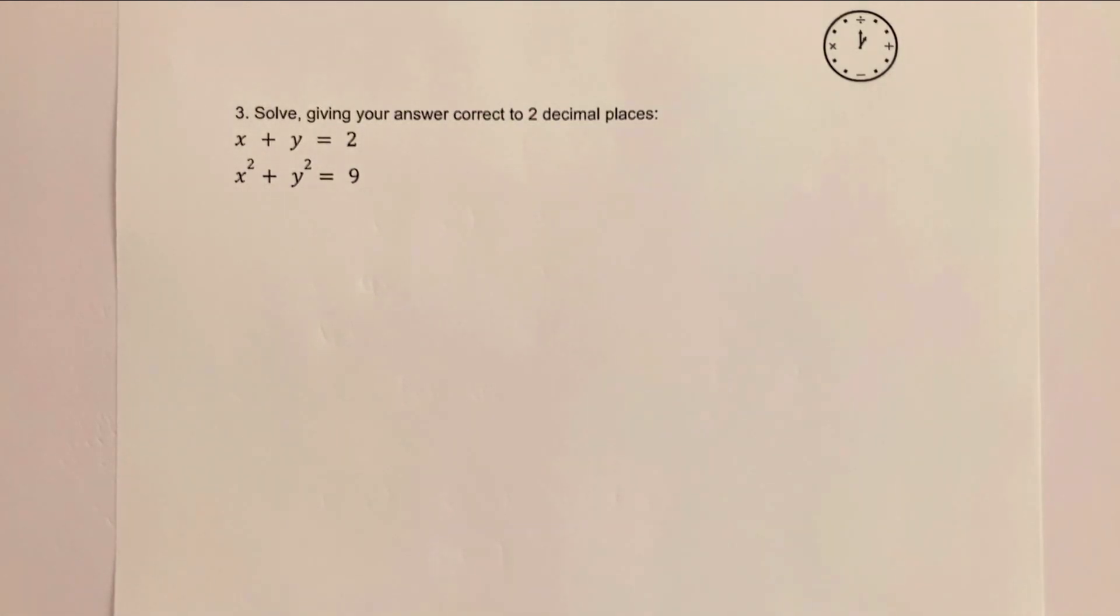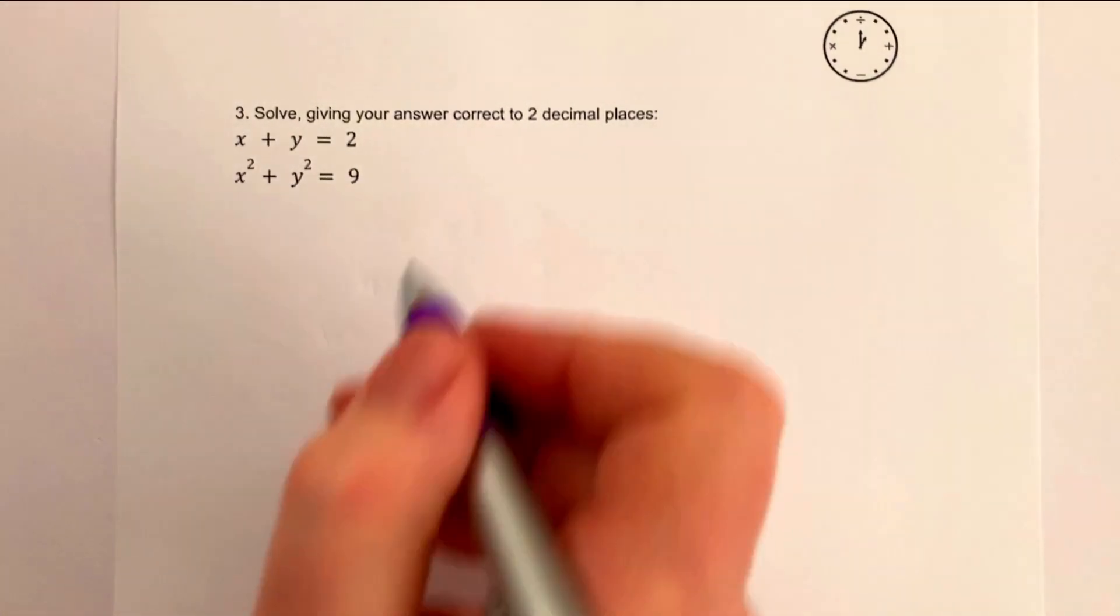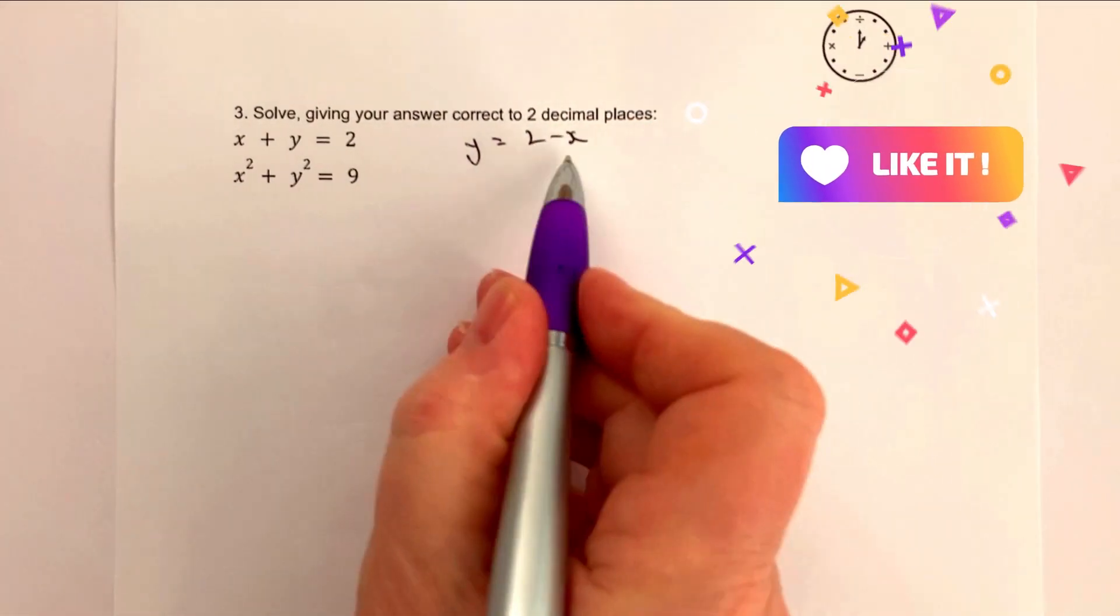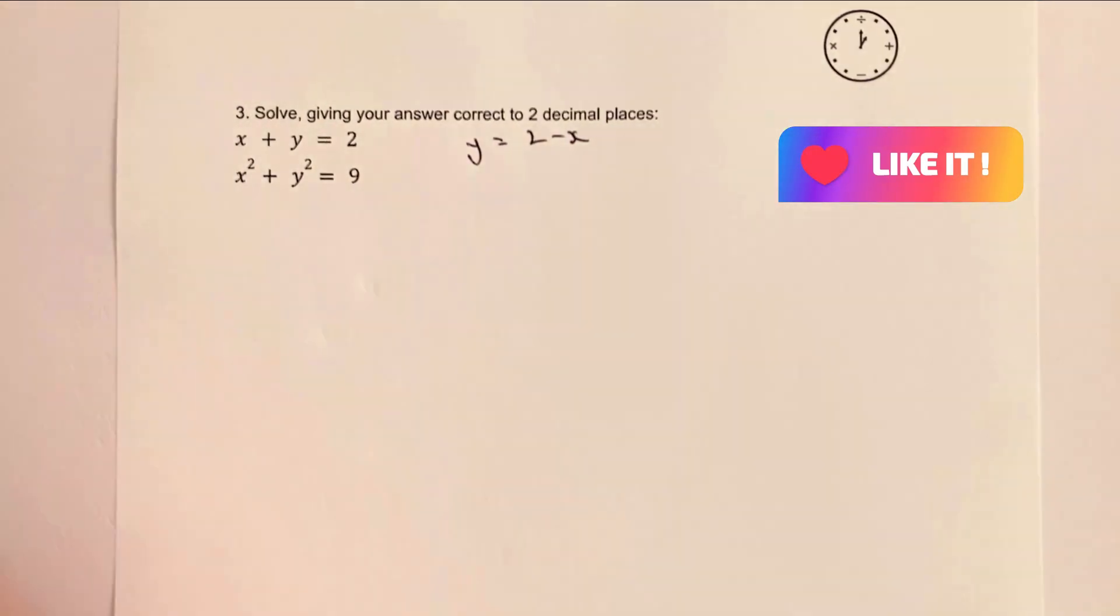What I'm going to do is use the same technique, but then when it comes to factorizing I'm going to use the quadratic formula. So I'm going to say that y equals 2 minus x. I'm going to say that value of 2 minus x substituted into here.